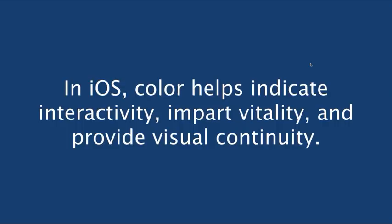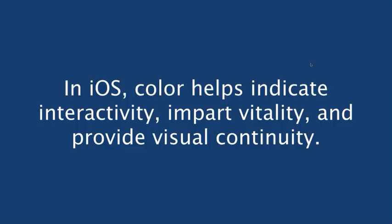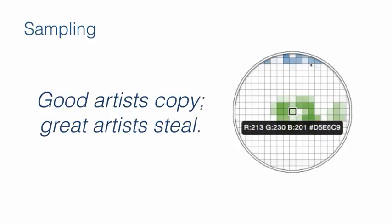One technique I use all the time is called sampling — in other parts of the world it's called stealing. Get to know and love your sampling tool. The sampling tool inside Sketch will help you lift colors out of UIs so you can look at them and try to use them in your application. Here are three applications on my phone — Twitter, Pinterest, and Flipboard — and I used the sampling tool to lift the colors off and put them down here.